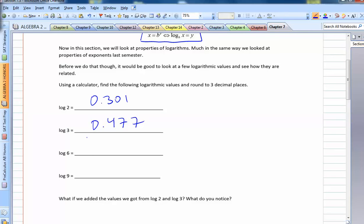Log 6, we get .778. And finally, log 9, we get .954.